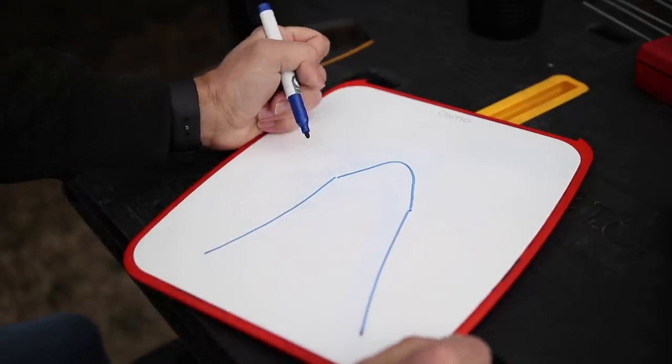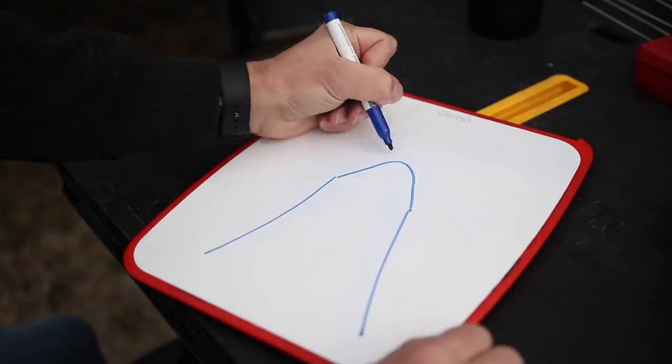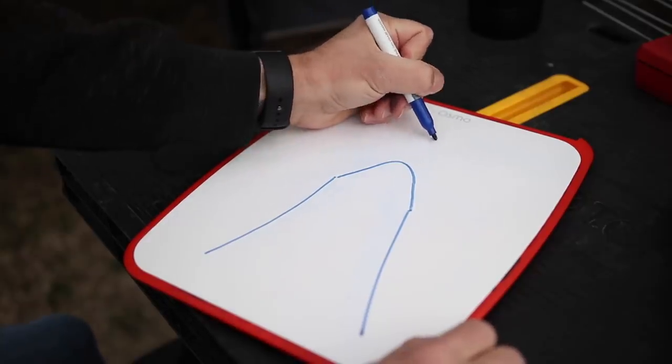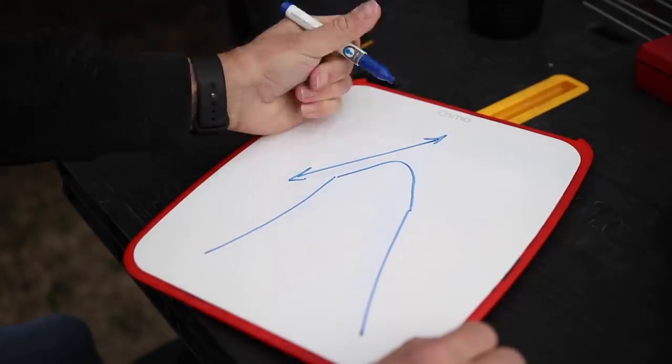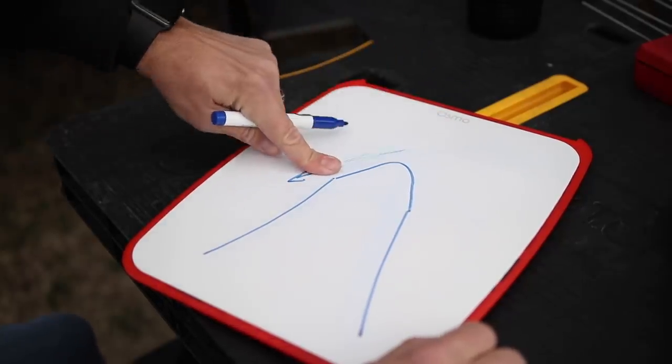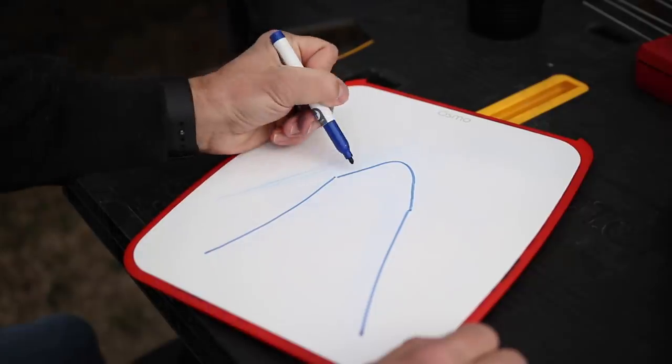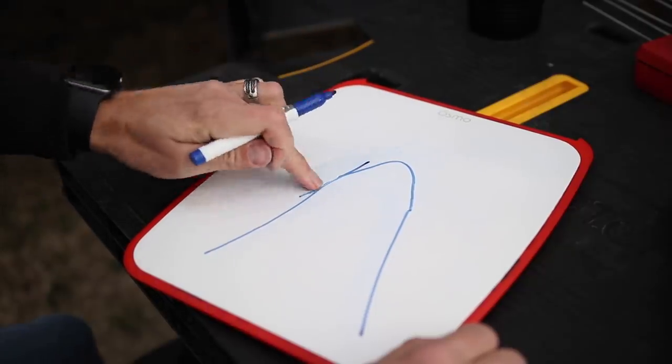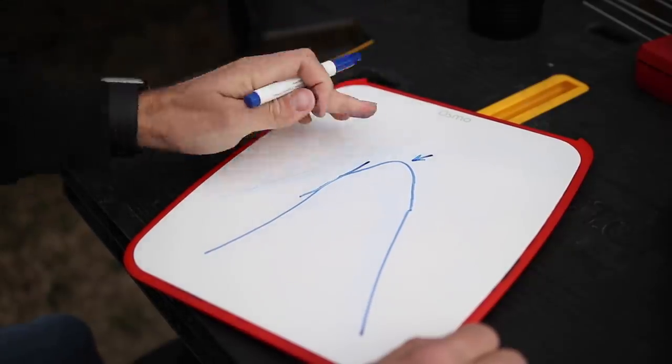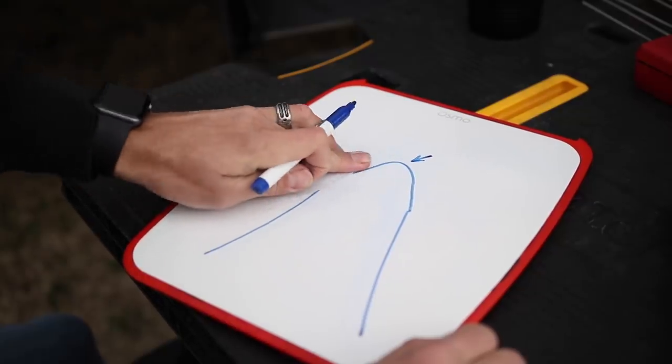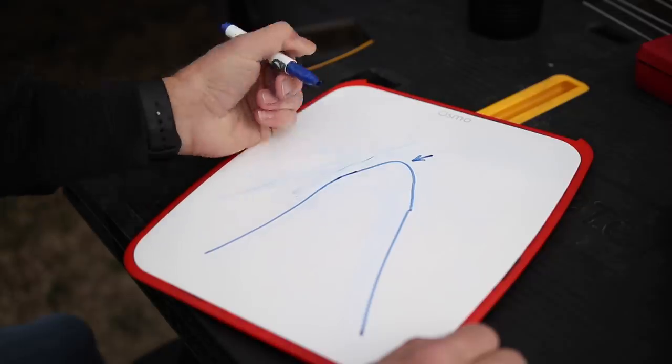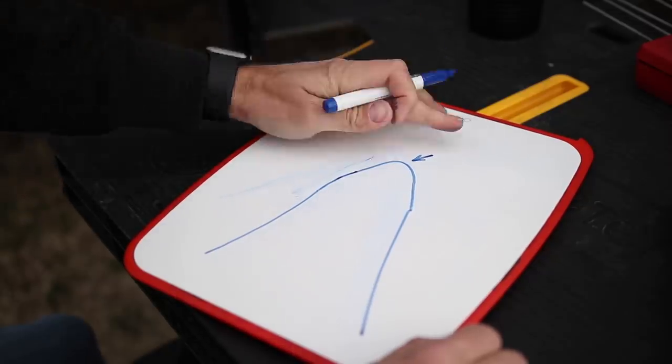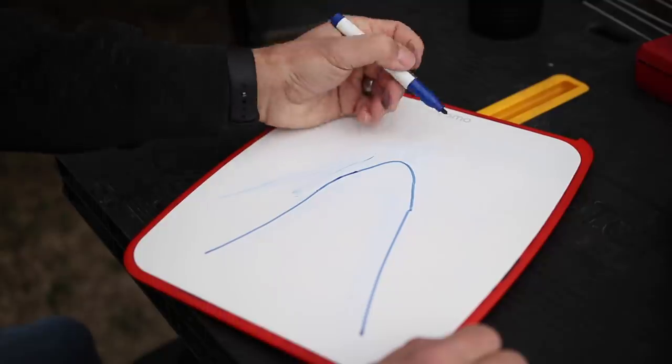So when we're sharpening our knife, the most important thing when we are running it across the whetstone is that we maintain this perfect angle at all times. Obviously, if you do too shallow of an angle, you're going to be grinding away right here and you're not going to be touching the apex at all.